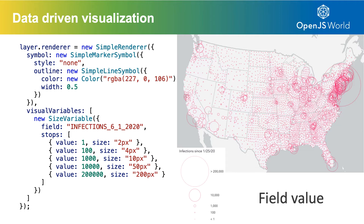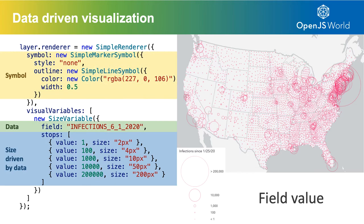I'm going to touch on a couple of visualization techniques — size and color. Looking at this map, we're showing the total number of positive test results by a particular date, June 1st of this year. We created this visualization using the renderer property of our layer — U.S. counties — representing them as pink circles at the centroids. The data-driven aspect comes from visual variables, which simply allow us to override a property of the symbol — size, color, rotation, or opacity — based on a data value. We specify a field, such as the number of infections on June 1st, 2020, and indicate what size the icon should be based on that data.